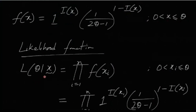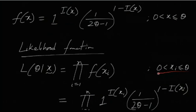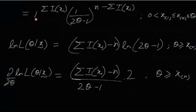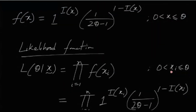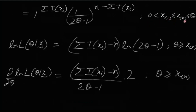The likelihood function L(θ | x) is the product of f(xi) over all i, since the observations are i.i.d. This equals 1^(Σi(xi)) × (1/(2θ − 1))^(n − Σi(xi)), subject to the condition that each xi lies between 0 and θ, which is equivalent to 0 < x(1) ≤ x(n) ≤ θ, where x(1) is the minimum and x(n) is the maximum of the sample.